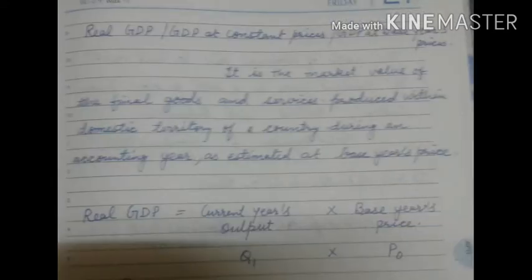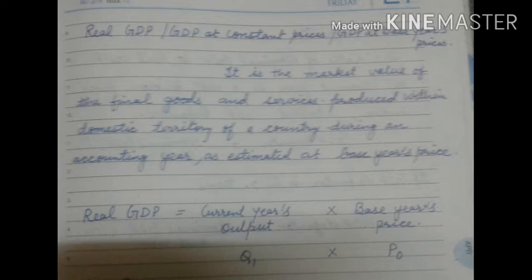Now we have the meaning of real GDP. What are the other names for real GDP? Real GDP means GDP at constant price, or GDP at base year's price. Base year means the year that is not the current year — it is the previous year; that is the base year's price.